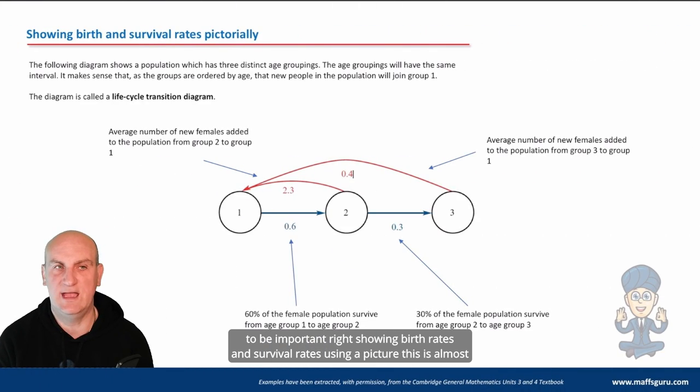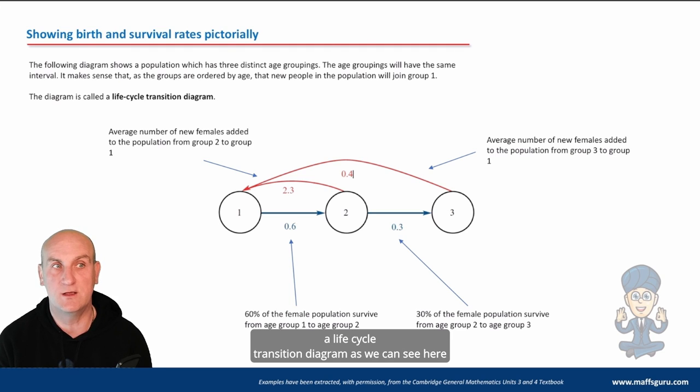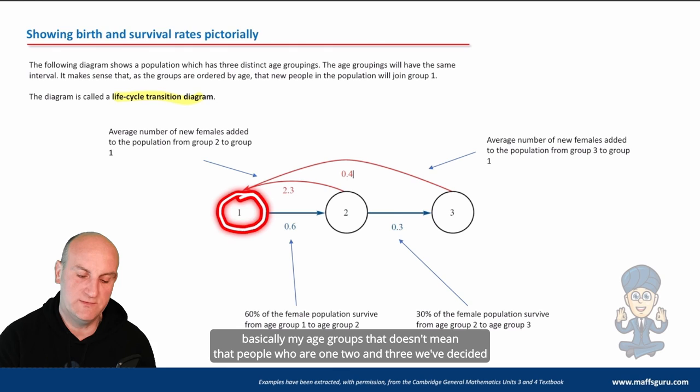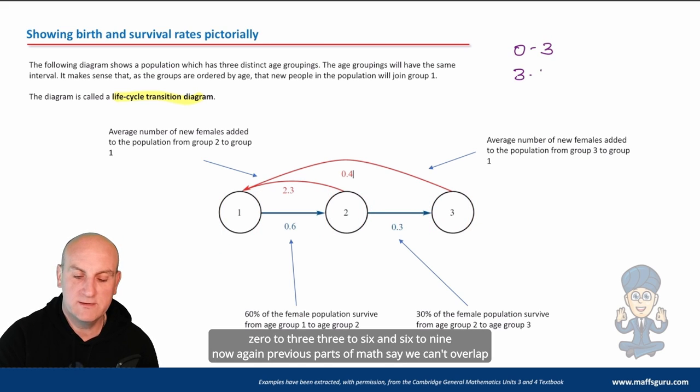Right, showing birth rates and survival rates using a picture. This is almost like a transition diagram, and in fact, it's called a life cycle transition diagram. So the first thing is, the big circles, the ones here, are basically my age groups. That doesn't mean that people who are one, two, and three. We've decided in this situation to split our age groups into three distinct groups. So it could be, for example, zero to three, three to six, and six to nine.